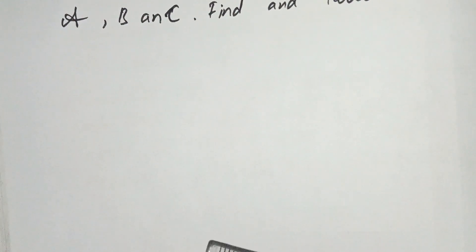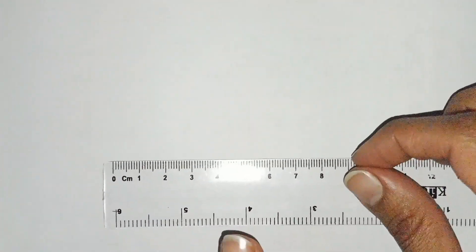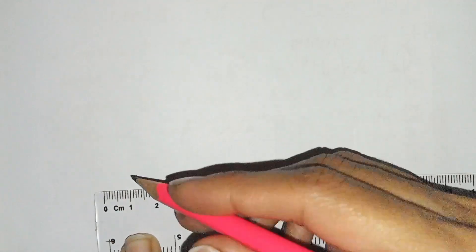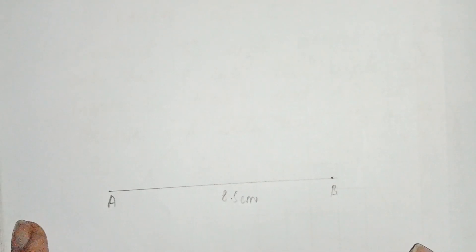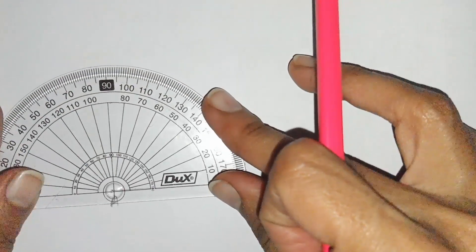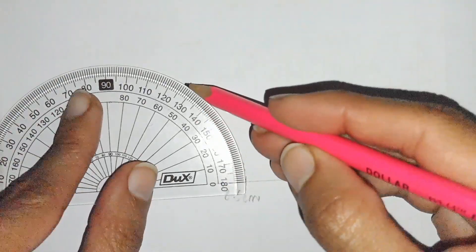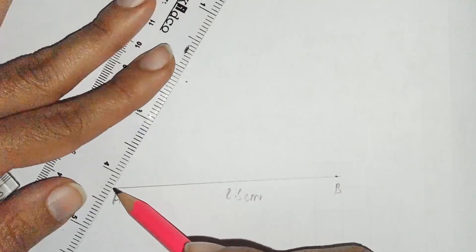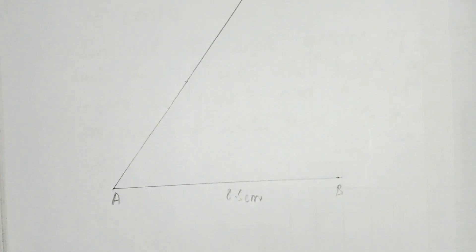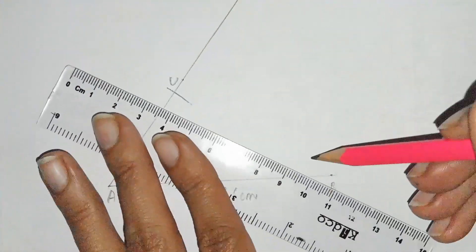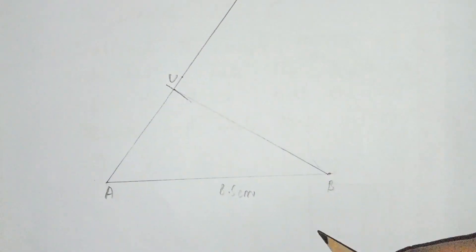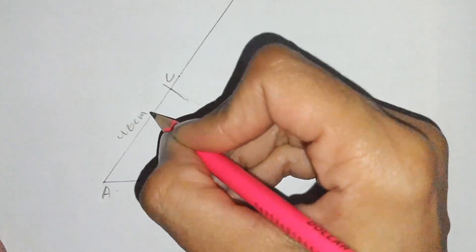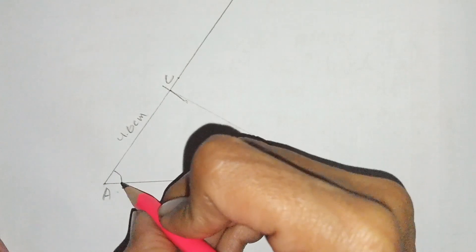I draw a line of 8.5 cm using the ruler — this is AB, 8.5 cm. AC is 4.6 cm and angle A is 54 degrees. Making an angle of 54: this is 50, and 4 more makes 54. Now join B with C — this is our required triangle.